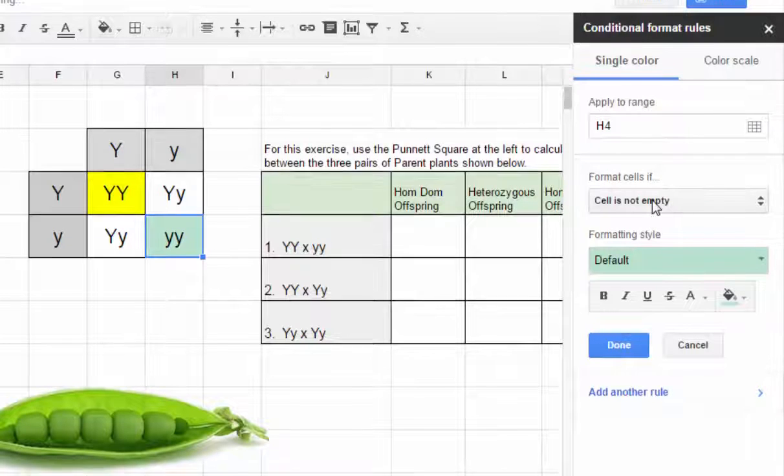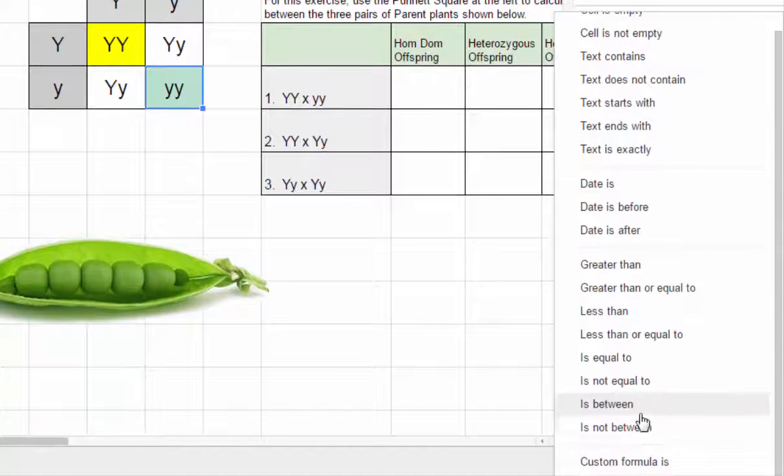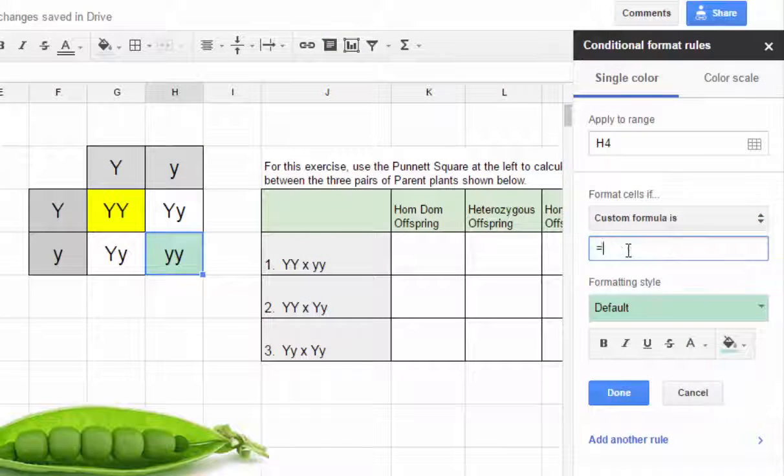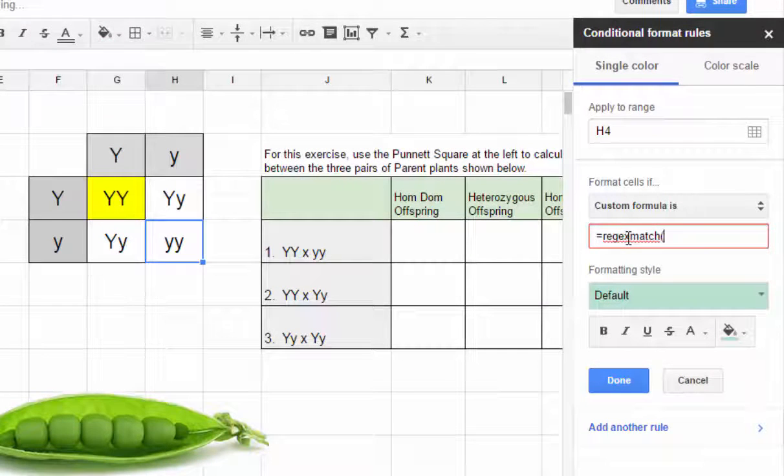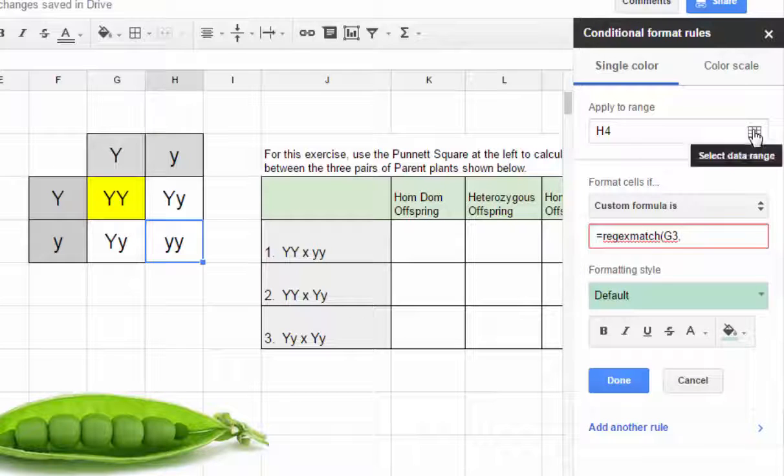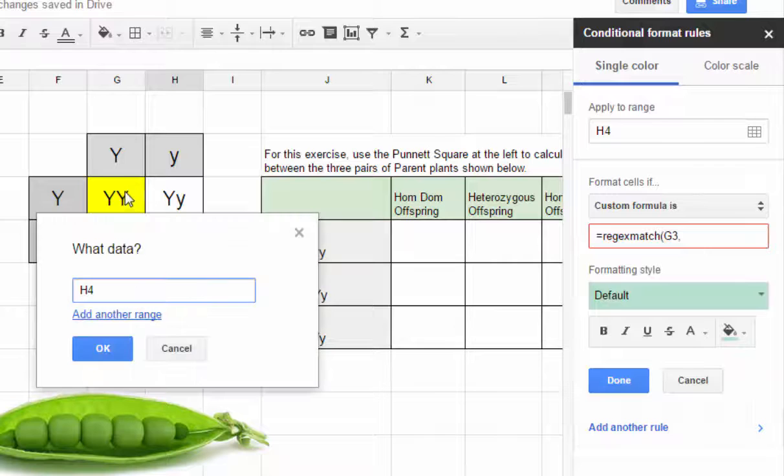Again we're going to choose custom formula is and it is a regular expression match, open parentheses, and we do have to put in one of those cells in the Punnett square. We'll use G3 again because it really doesn't matter, it will still pick up on the others because we're applying this entire rule to that entire range up here. We just hit select data range and tell it that it's going to apply to all of these.